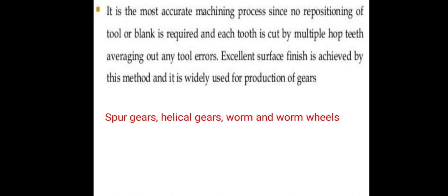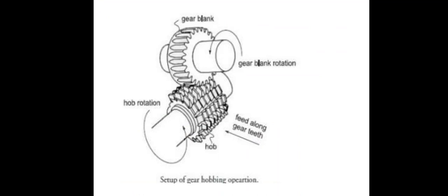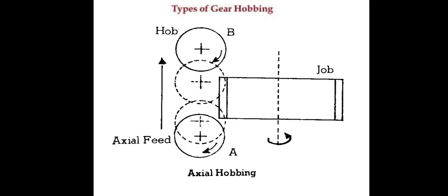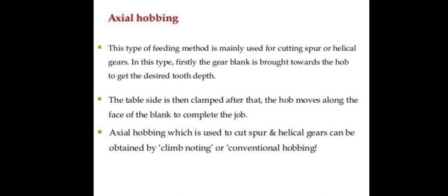Gear hobbing is used for spur gears, helical gears, and worm and worm wheels. The setup of gear hobbing involves: feed along gear teeth, hob rotation, and gear blank rotation. Types of gear hobbing include axial hobbing.